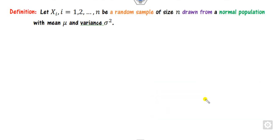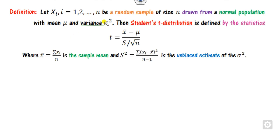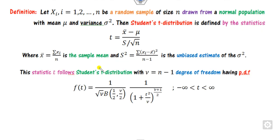What is the definition of the T-statistic or T-distribution? If you have a sample of size n taken from a population with mean mu and population variance sigma squared, then the statistic small t equals x-bar minus mu, where x-bar is the sample mean and capital S is the unbiased estimator. This statistic T follows the student's distribution with the degree of freedom nu.